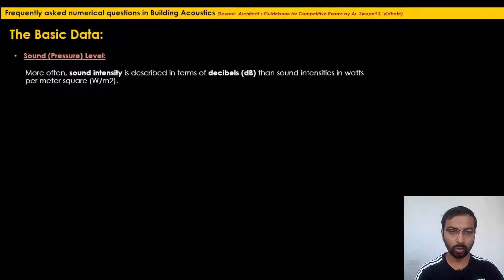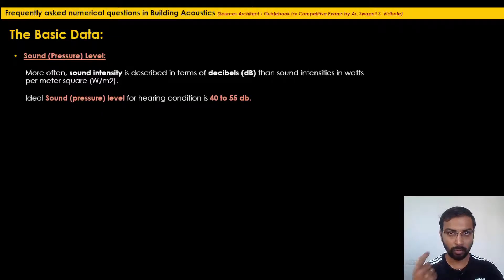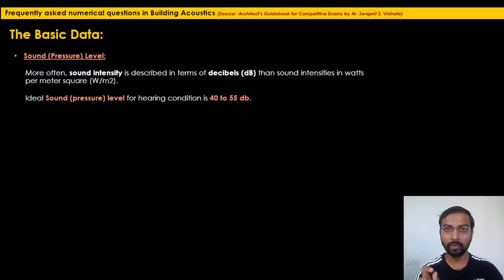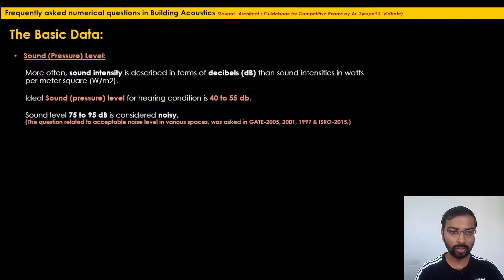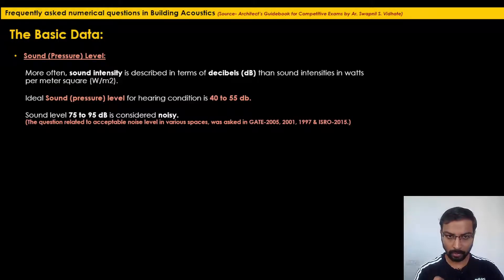The ideal sound pressure level for a normal human being is 40 to 55 dB — this is the ideal hearing condition. Beyond that, a sound level of 75 to 95 dB is considered noisy. Questions based on acceptable noise levels in various spaces — theaters, classrooms — have been asked in GATE 2005, 2001, 1997, and 2015.